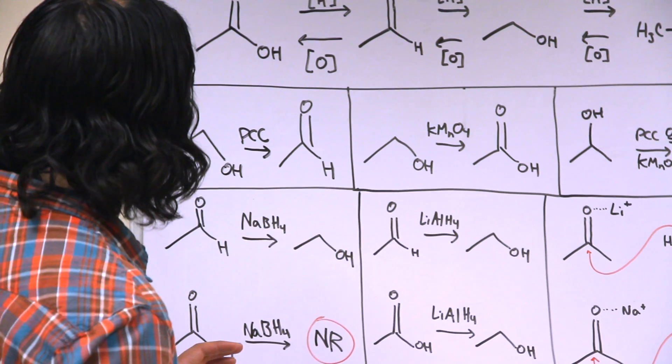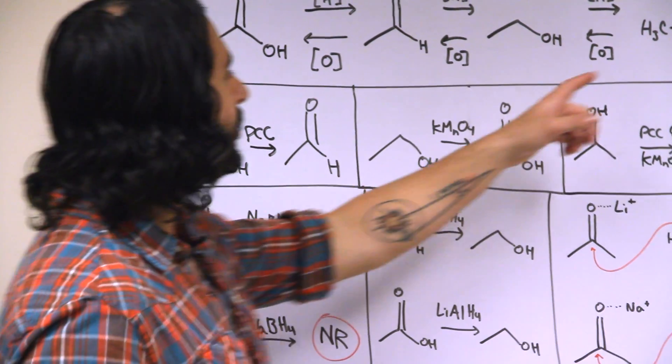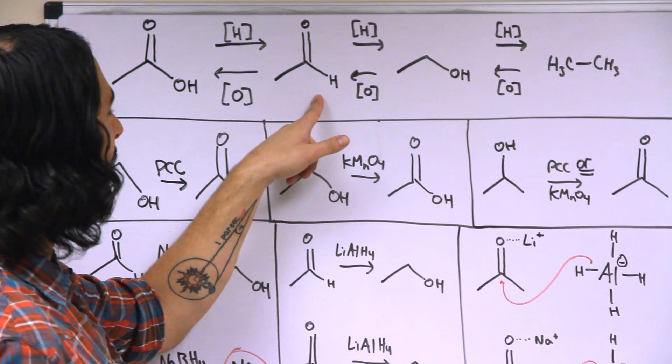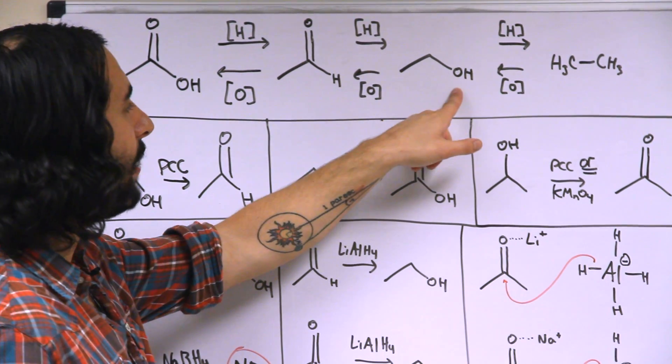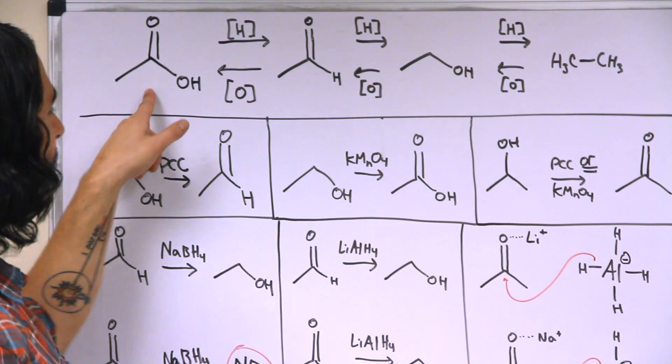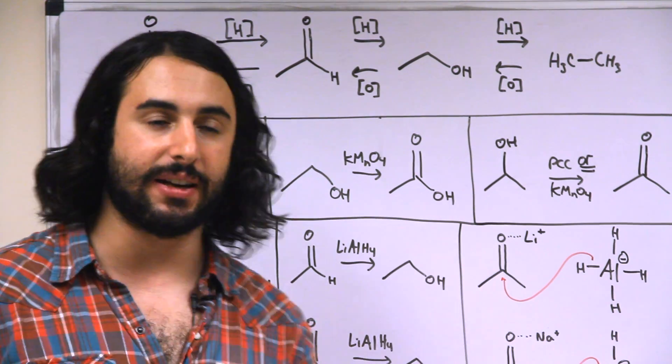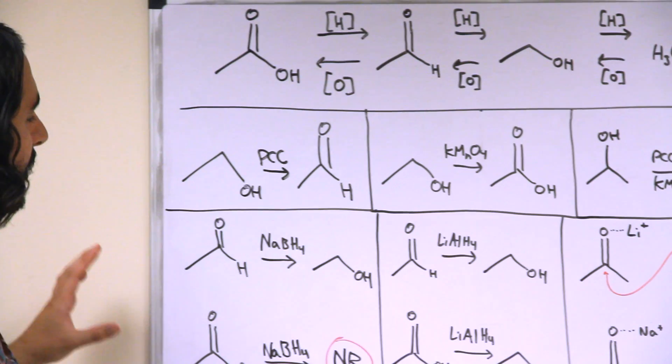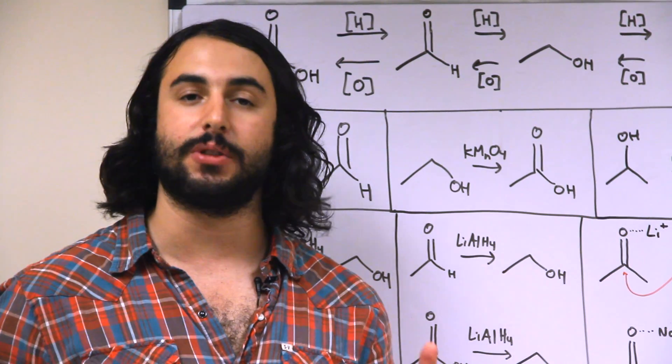So now let's look at reducing agents, whereas oxidizing agents are going to help us go in this direction. We saw that we could go from primary alcohol to aldehyde with the PCC or primary alcohol directly to carboxylic acid with potassium permanganate. Now let's see what's going on in the opposite direction. So we have different reducing agents, and again, these can have different strengths.